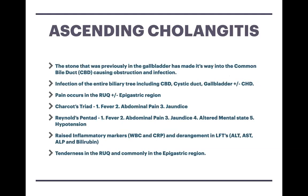Now let's talk about ascending cholangitis. This occurs when that stone moves further down the tract — no longer lodged just in the neck of the gallbladder or the cystic duct, but finds its way down to the common bile duct. Behind any obstruction you often see infection, and this is what ascending cholangitis is: an infection of the entire biliary tree, which includes the CBD, the cystic duct, the gallbladder, and in some cases the common hepatic duct too. The patient presents with pain in the right upper quadrant and often in the epigastric region. It's worth mentioning Charcot's triad here: fever, abdominal pain, and jaundice.